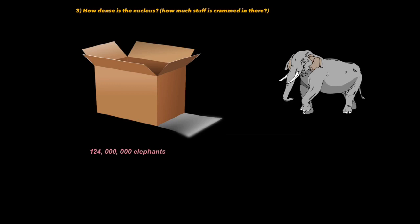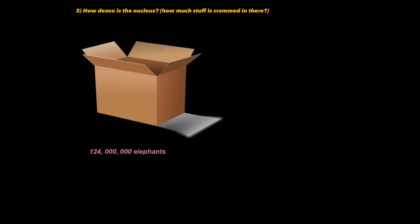An elephant weighs about five tons, or 5,000 kilograms. So, how many elephants would I have to cram into that box for that box to have the same density as a nucleus? Well, amazingly, I'd have to cram 124 million elephants into that box. What I'm saying is if I could blow an atom's nucleus to the size of this cardboard box, it would have the same mass as this box crammed with 124 million elephants.